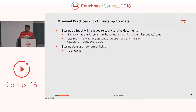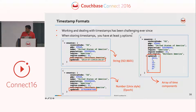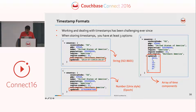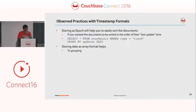Storing as epoch will help you to easily sort the documents. If you want documents sorted by last update time, you can store the date as epoch and say SELECT * FROM couch_music WHERE type = 'track' ORDER BY updated DESC — so the most recently updated track will be on top. Storing date in an array format also helps, especially when you're grouping.